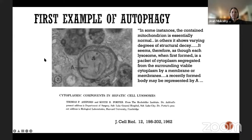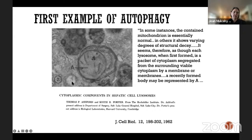The first published example of autophagy was in 1962. Researchers noted that in some instances the contained mitochondria appeared essentially normal — that would be a mitochondrion inside an autophagosome before it meets the lysosome. In others, it showed varying degrees of structural decay, occurring after the lysosome combines with the autophagosome. The image shows the characteristic double membrane engulfing an organelle, which would then bind with the lysosome for breakdown.